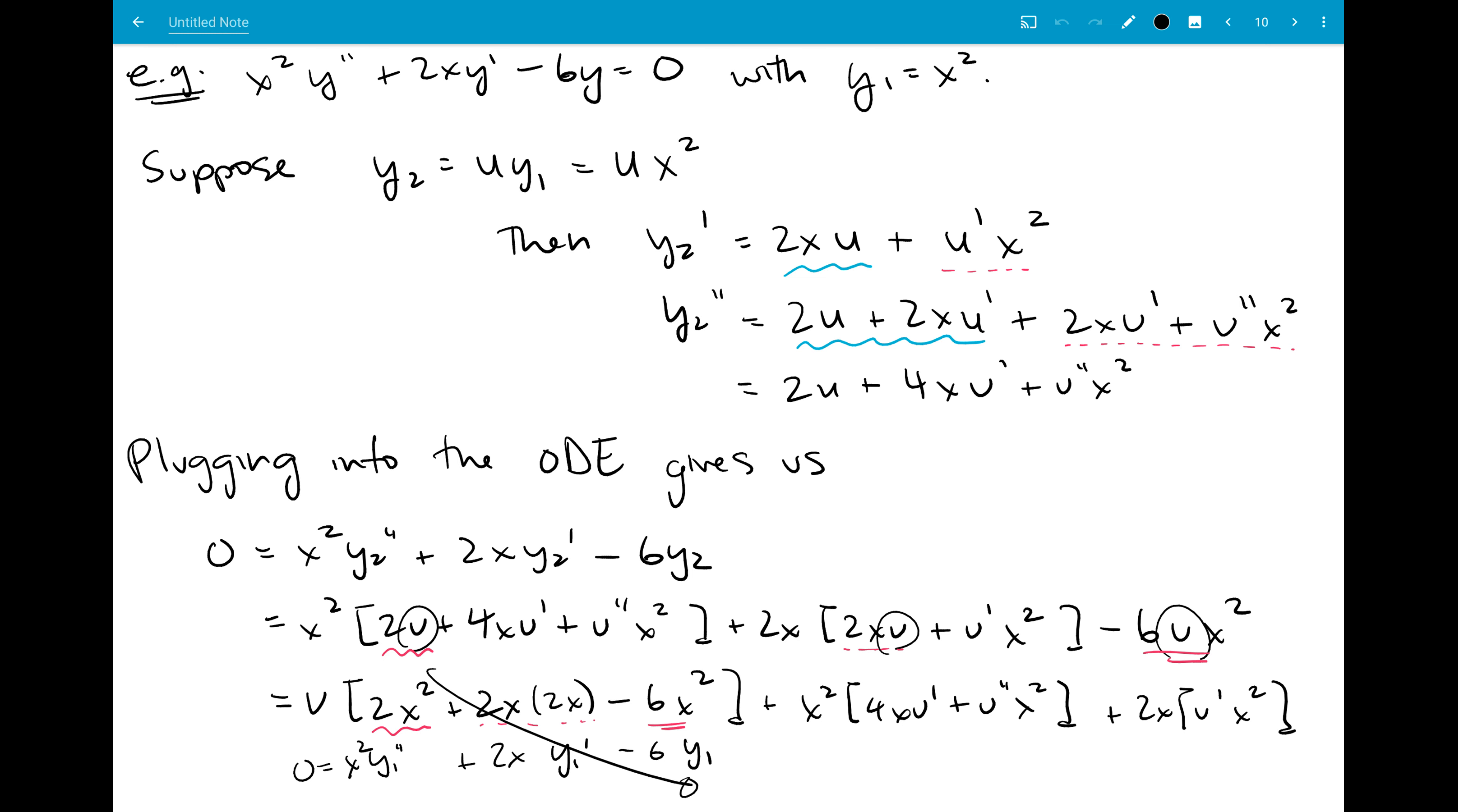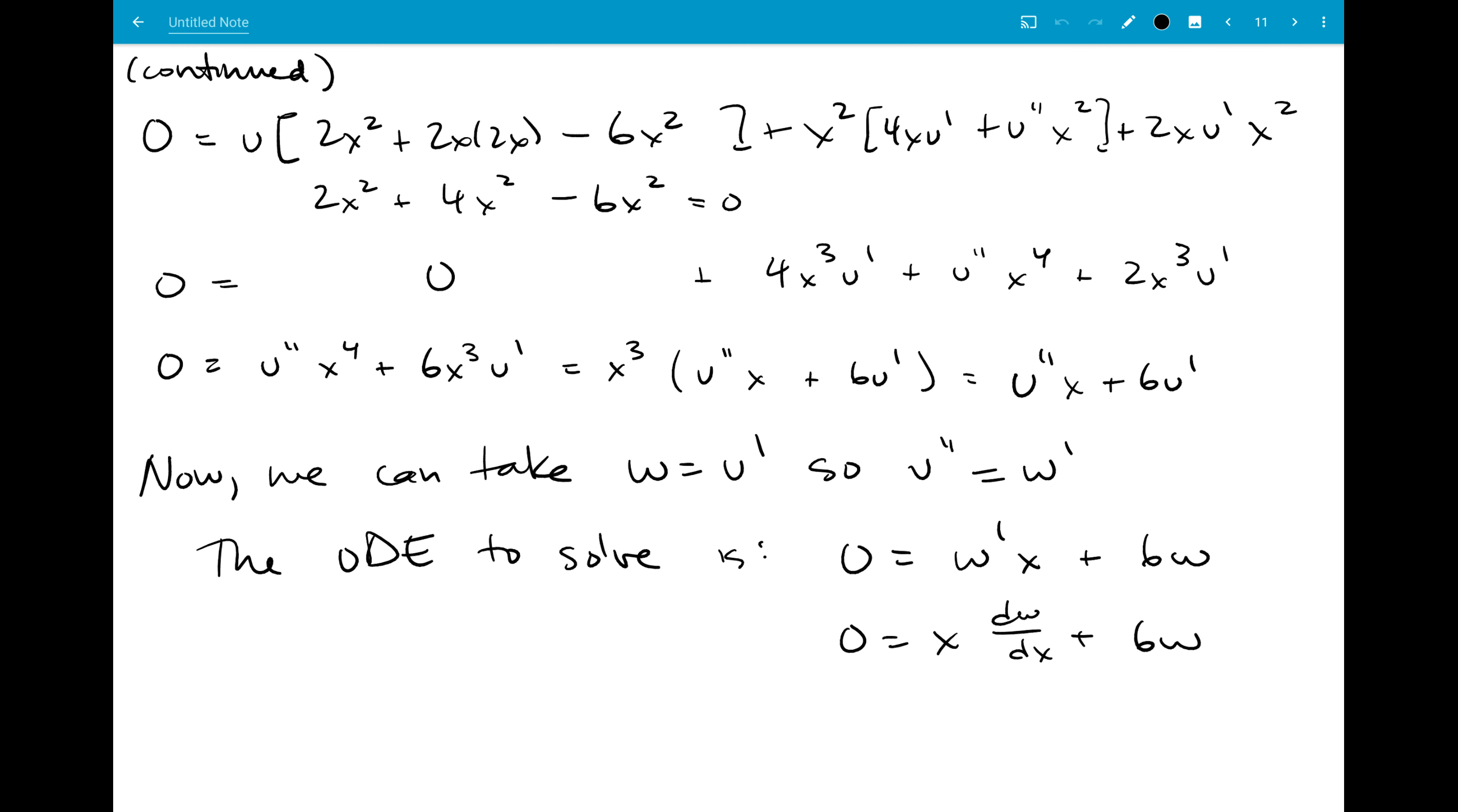And that we shouldn't use the formula for what y1 is. And then we did our specific example where we went through all the same steps. You can see the same place where I talked about how the product rule was working, and we canceled out that term attached to u.